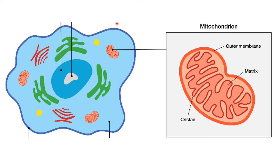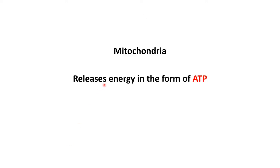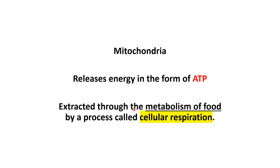Each cell contains not just one but many of these powerhouse organelles. The number and size of the organelles varies depending on the function of the cell. For instance, muscle cells need a lot of energy, so they have thousands of mitochondria in each cell, whereas skin cells have only a few hundred mitochondria per cell.